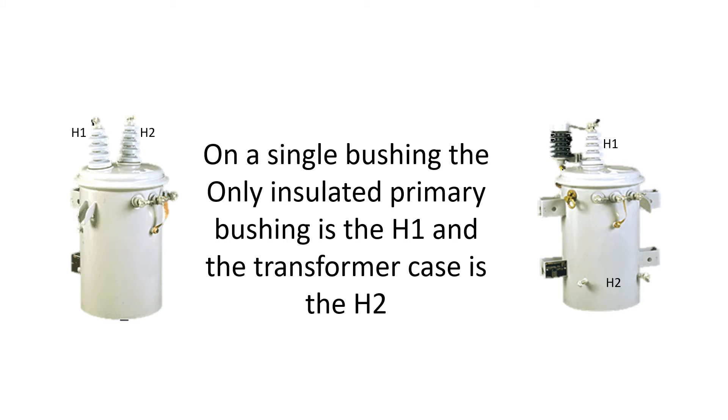On a single bushing transformer, the only insulated primary bushing is the H1. Well, it always takes two connections to make a transformer work, so the H2 is then the tank. We used to ground the tank, we had the ground loop on the tank, and we made certain that the tank was always grounded properly. Because if it wasn't grounded, that tank could become energized. It is the primary bushing, after all, so we could have primary voltage if any open occurred from the tank to the ground or system neutral.